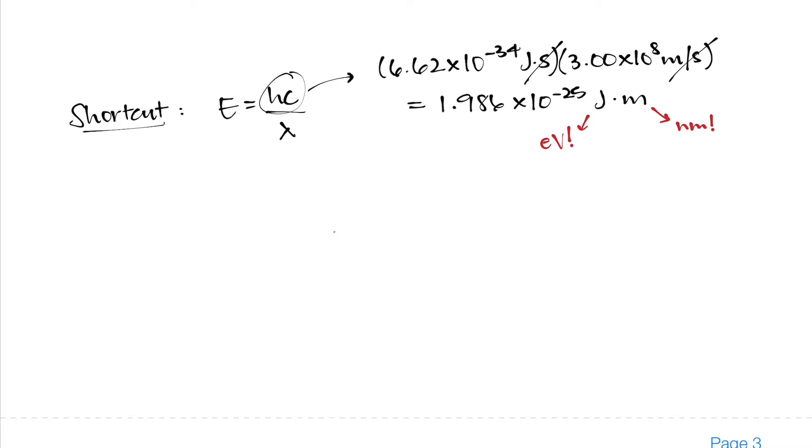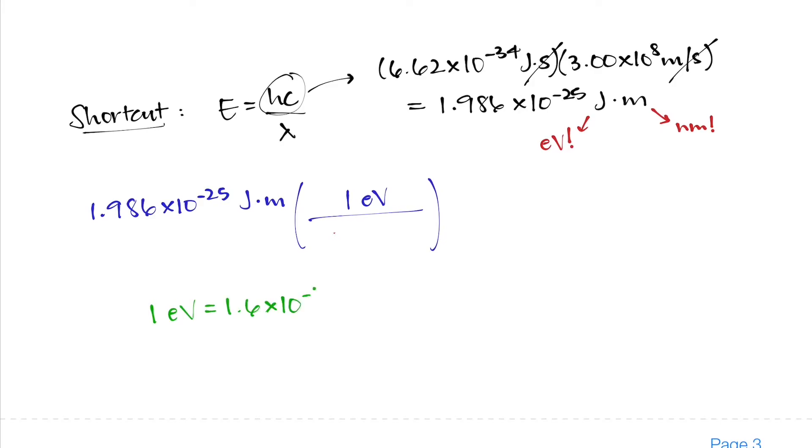We have 1.986 times 10 to the power of negative 25 joules times meters. Now if I want to get rid of the joules and replace that with electron volts, I'll put my conversion factor in parentheses here with the electron volts in the numerator and the equivalent of an electron volt in joules in the denominator. The conversion factor itself is 1 electron volt equals 1.6 times 10 to the power of negative 19 joules. So 1.6 times 10 to the power of negative 19 joules goes in the denominator of this fraction. The joules here will cancel with the joules there, leaving me with only an electron volt as my unit of energy, which is exactly what I want.